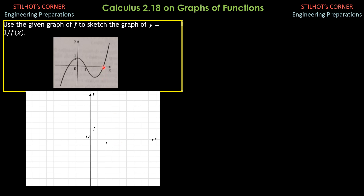Then, just to the left of x = 3, the value of f of x is again almost 0 but negative, so 1 over almost 0 which is negative is negative infinity. The graph in this portion approaches negative infinity. Just to the right of the vertical asymptote at x = 3, f of x is almost 0 but positive, so 1 over almost 0 which is positive is positive infinity. As x approaches positive infinity, f of x increases without bound, and 1 over f of x approaches 0. So the graph in this portion starts from positive infinity and approaches 0.